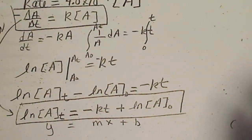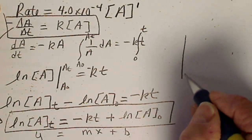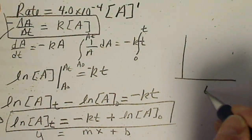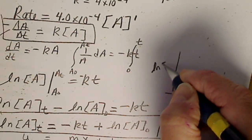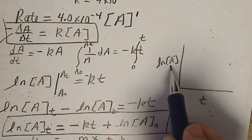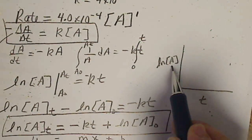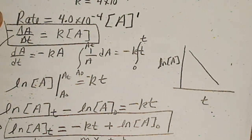It fits the form Y equals MX plus B. So if we were to graph the data, if we were given data, we have time. And the Y stands for the natural log of A. If we were given these concentrations, we would plug in the natural log and we would end up getting a linear equation.